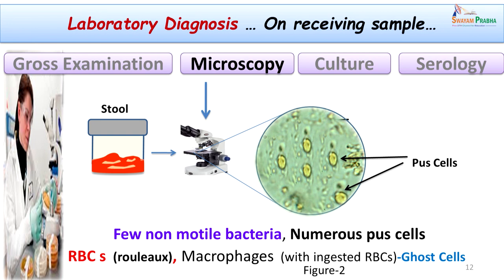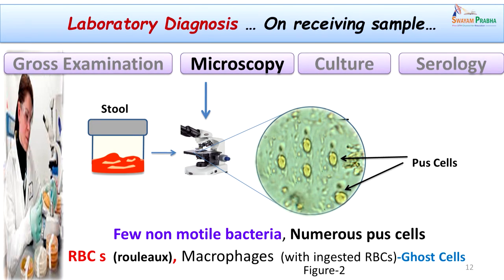We then subjected the specimen to microscopy via saline preparation. In the microscopy we could see plenty of pus cells and non-motile bacteria — unlike a normal stool which would show motile organisms. We also saw RBCs and, in some cases, macrophages. These macrophages appear as ghost cells because they engulf RBCs present. The gross and microscopic findings gave us many clues to call this case as bacillary dysentery.